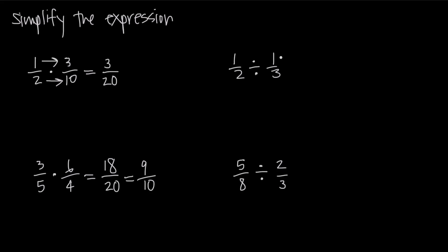The reciprocal of 1/3 is 3/1 — we just put the denominator in the numerator and the numerator in the denominator, so we flip their places. When we find the reciprocal of this fraction, instead of doing division, we do multiplication. So we're going to leave the first fraction exactly as it is — 1/2 — and instead of division, we're going to do multiplication, and flip this fraction upside down. So instead of 1/3, we'll get 3/1.